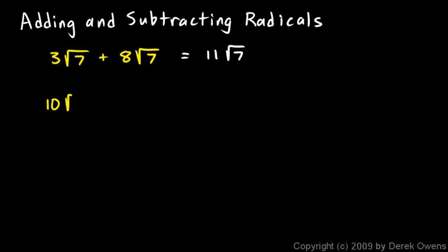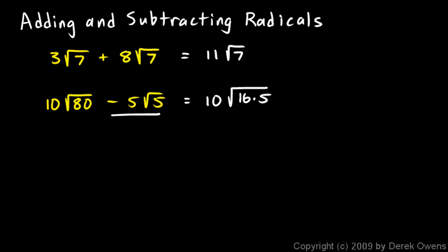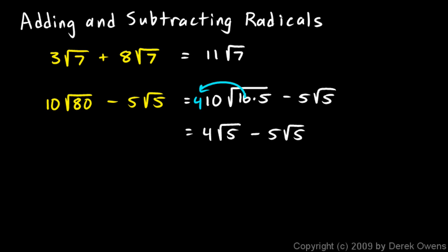This next one: 10 times the square root of 80 minus 5 times the square root of 5. I'm going to deal with this by simplifying the square root of 80. I have 10 times, but instead of the square root of 80, I'll factor the 80. I could factor it as 8 times 10, but neither of those are perfect squares. But 80 is also 16 times 5, and that helps because the 16 can come out from under the radical. The 16 gets square rooted and pops out as a 4, and that's 4 times 10 out front. So I end up with 40 times the square root of 5 minus 5 times the square root of 5.